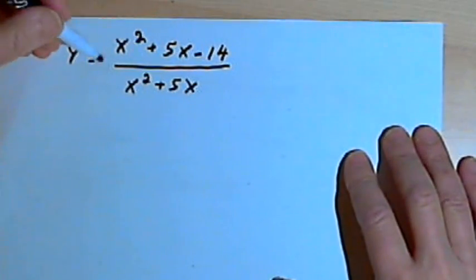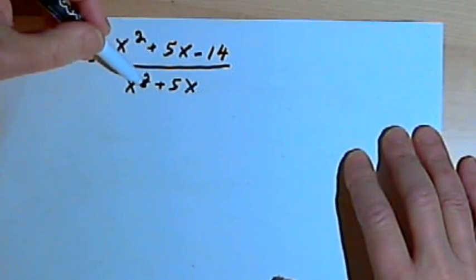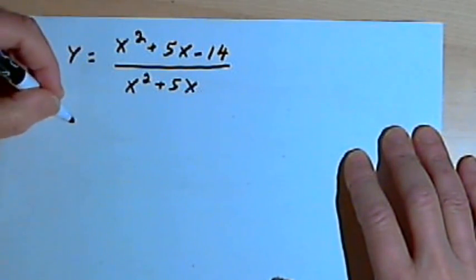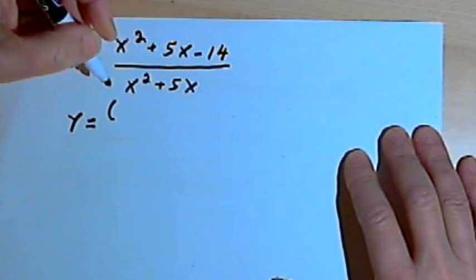Here we've got y equals x squared plus 5x minus 14, and that's over x squared plus 5x. Once again, we'll start out by factoring this. That's going to turn into